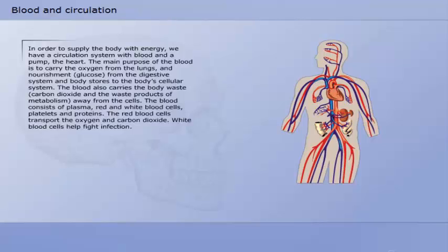In order to supply the body with energy, we have a circulation system with blood and a pump. The main purpose of the blood is to carry the oxygen from the lungs and nourishment from the digestive system and body stores to the body's cellular system. The blood also carries the body waste away from the cells.